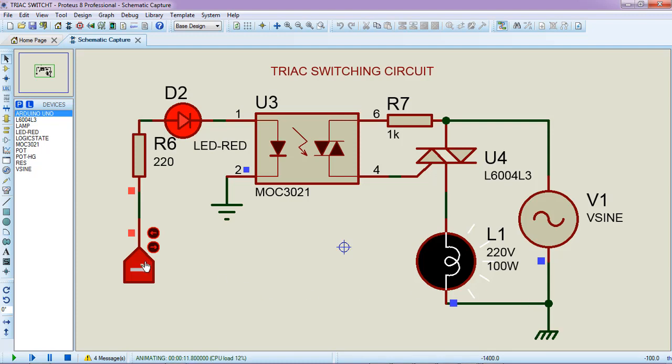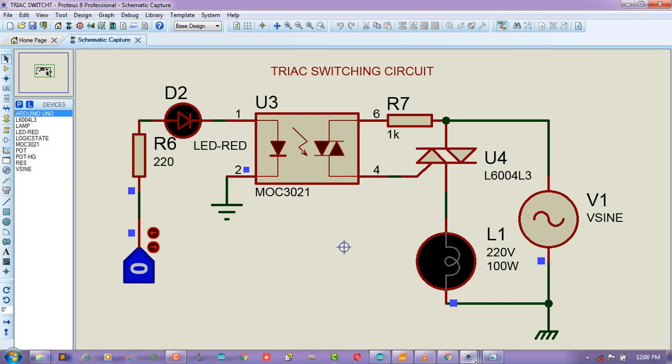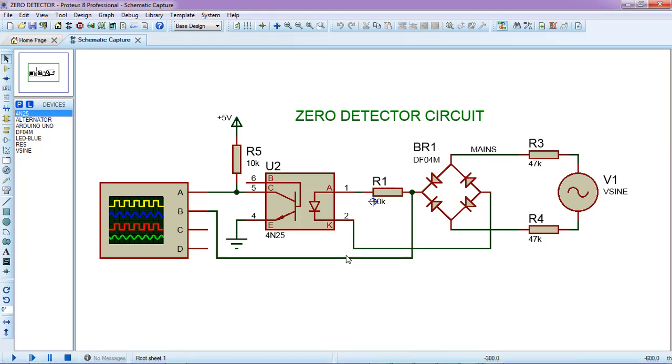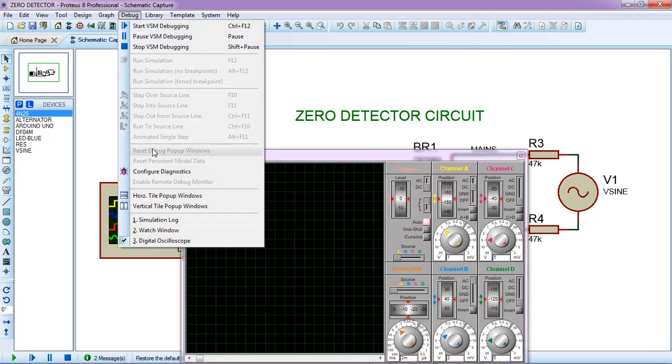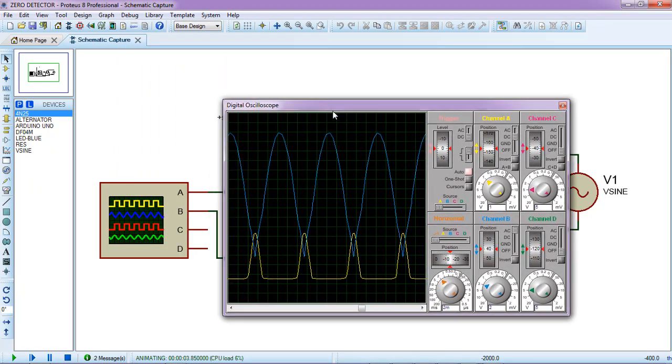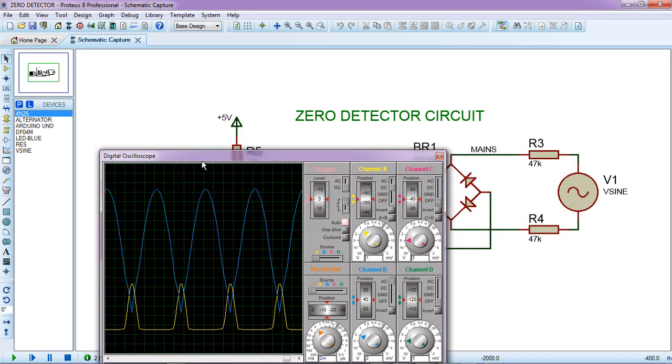Now the second socket is a zero detector socket. What the zero detector socket does is it's just detecting whenever the signal crosses zero. Whenever the signal crosses zero, the optocoupler output pin goes high. That's how zero detector socket works. If I run the simulation you'll see it.